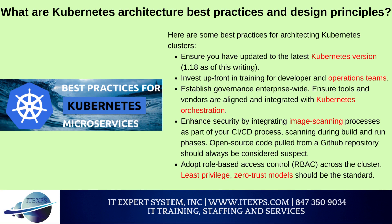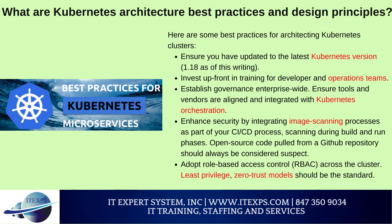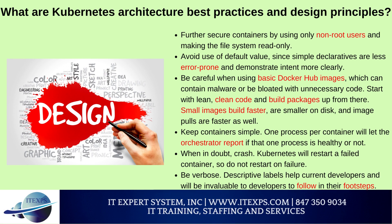Kubernetes architecture best practices: ensure you have updated to the latest Kubernetes version; invest upfront in training for developer and operations teams; establish enterprise-wide governance; ensure tools and vendors are aligned and integrated with Kubernetes orchestration; enhance security by integrating image scanning as part of your CI/CD process, including scanning during build and run phases; open source code pulled from a GitHub repository should always be considered suspect; adopt role-based access control across the cluster; and apply least privilege, zero trust models as the standard.